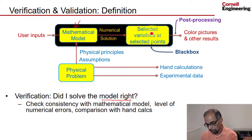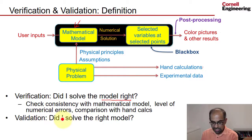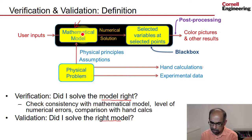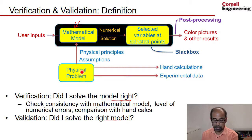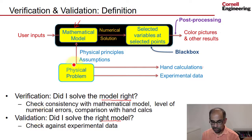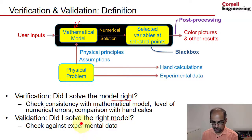Verification looks at whether you solved your particular mathematical model correctly. In contrast, validation asks: did I solve the right model? Whatever mathematical model I picked, is that a reasonable representation of the physics for my particular purpose? Are the physical principles valid? Are the assumptions reasonable? To check the validity of the mathematical model versus the physical problem, one typically needs experimental data, which we have. That's how we will do the verification and validation.